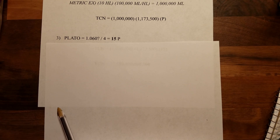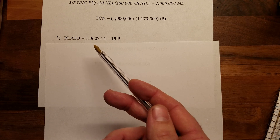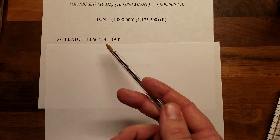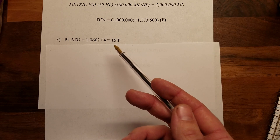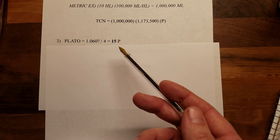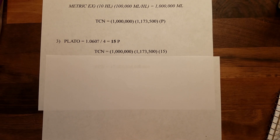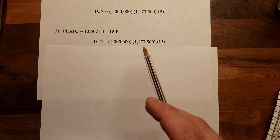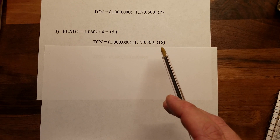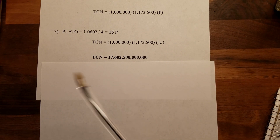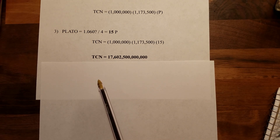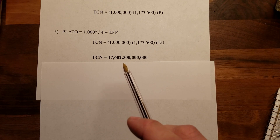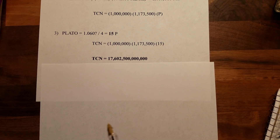Using the expression 'life starts at 1060,' let's use 1.060 specific gravity. To convert to Plato, divide the points by 4: 60 ÷ 4 = 15 degrees Plato. Plugging in all three values — 1 million cells, 1,173,500 milliliters (10 bbl), and 15 degrees Plato — gives us our Total Cells Needed: 17,602,500,000,000, or 17 trillion 602 billion 500 million cells.